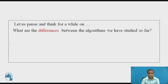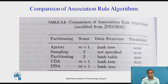Let us pause and think about the differences between the algorithms studied so far to generate large data sets — one based on data and one based on parallelism, which is task parallelism. In the comparison of association rules, we have Apriori, Sampling, Partitioning, CDA, and DDA. The number of scans is: Apriori m+1, Sampling 2, Partitioning 2, CDA m+1, DDA m+1. Data structures are indicated, along with whether data parallelism or task parallelism is used.